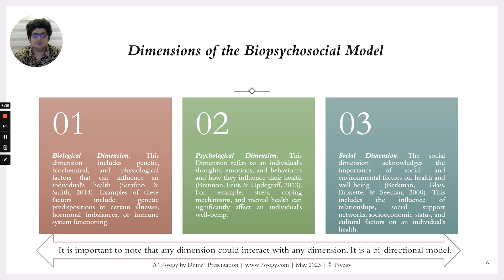The social dimension acknowledges the importance of social and environmental factors on health and well-being. These factors could include social relationships, social support networks, socioeconomic status, and cultural factors on an individual's health. It is important to note that any dimension could interact with any other dimension at any point in time, so there is no fixed inception point.